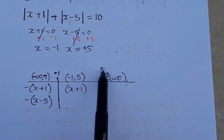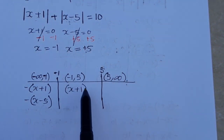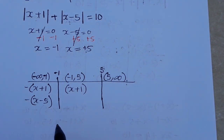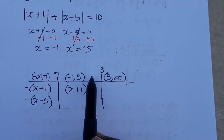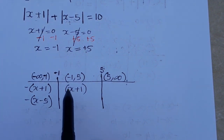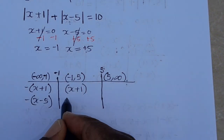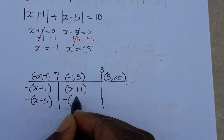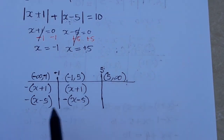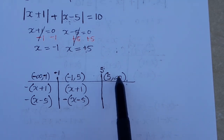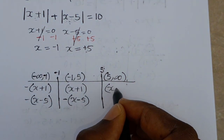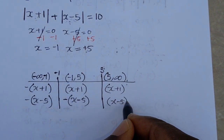For any value less than critical value 5, for example replacing x with 2, the expression x minus 5 gives a negative number. So in the second interval, we have (x plus 1) positive and negative (x minus 5). In the final interval from positive 5 to infinity, all expressions are positive, so we have (x plus 1) and (x minus 5) both positive.